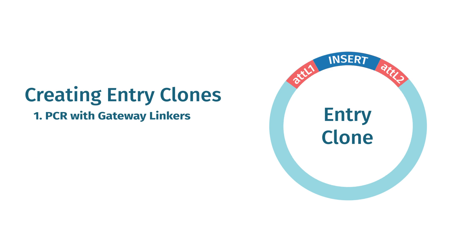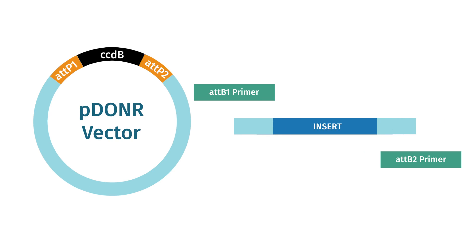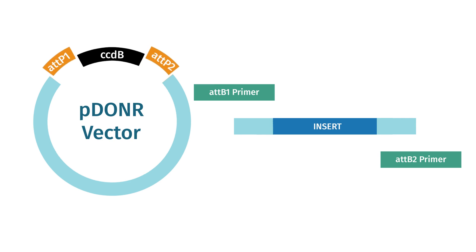The PCR method begins by creating entry clones through a BP clonase recombination of a PCR product with a donor vector. Donor vectors include AT-P1 and AT-P2 sites, which recombine with a PCR product flanked by AT-B1 and AT-B2 sites.